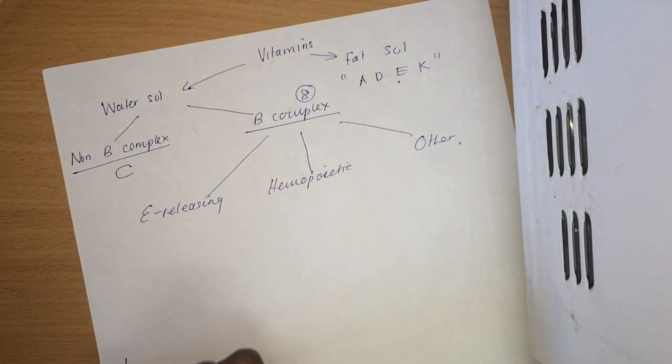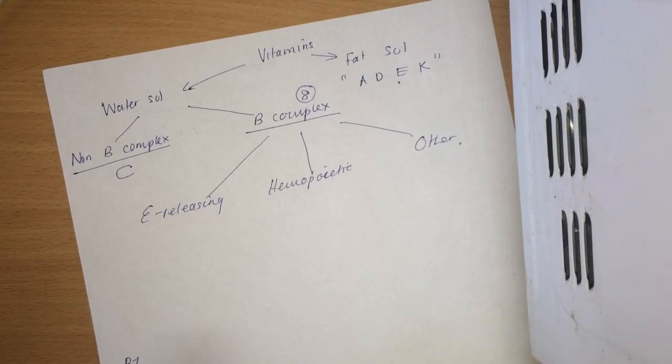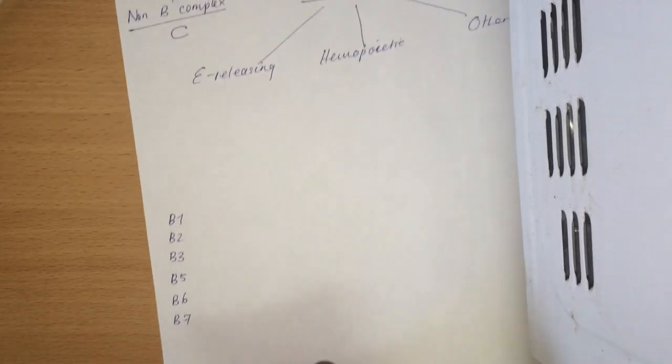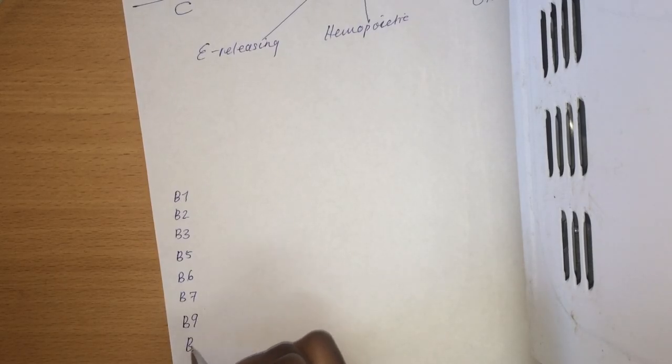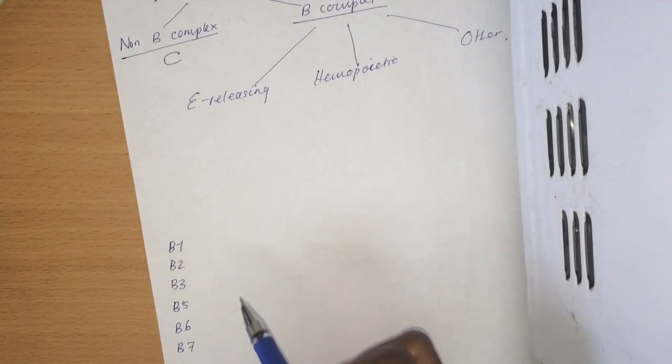Your B complex vitamins are eight and they are B1, B2, B3, we don't have a B4, so B5, B6, B7, we don't have a B8, so B9 and B12.